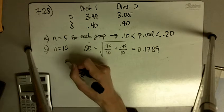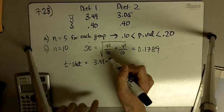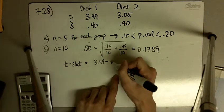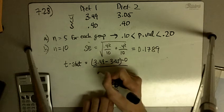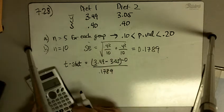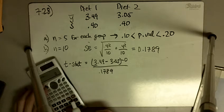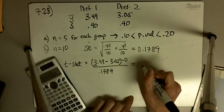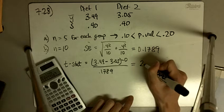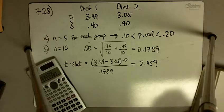And so our t-statistic is going to be 3.49 minus 3.05 minus 0 divided by 0.1789. So let me just do this. And so this leads us to a t-statistic of 2.459.